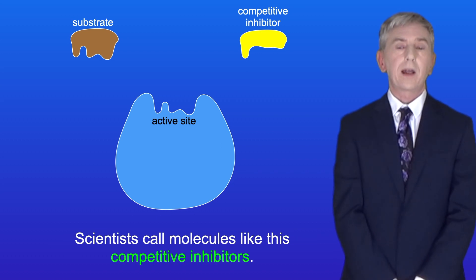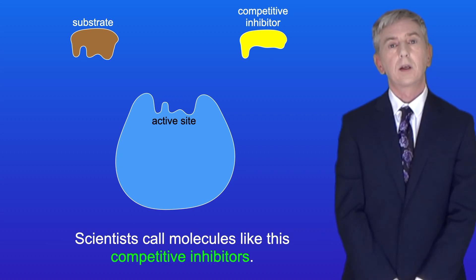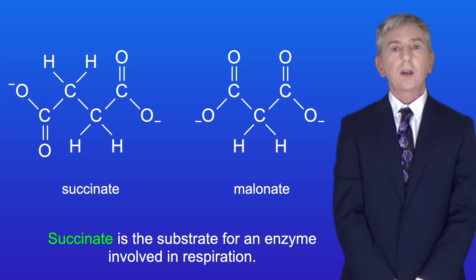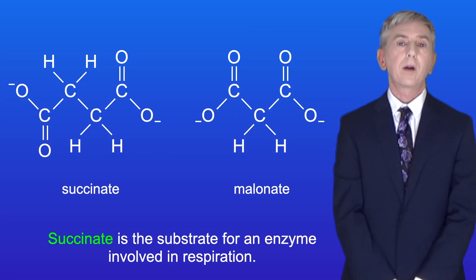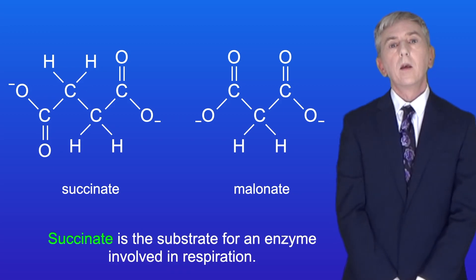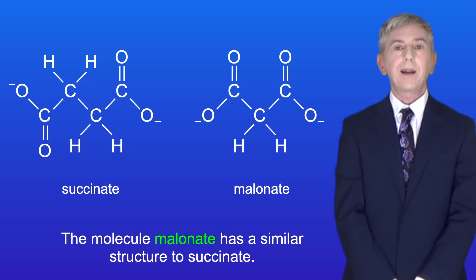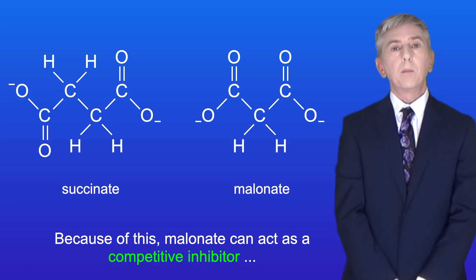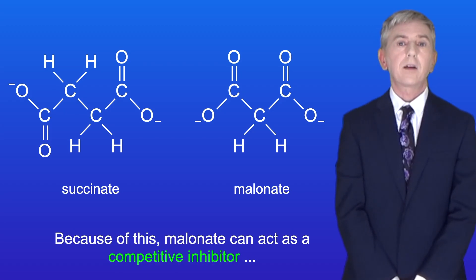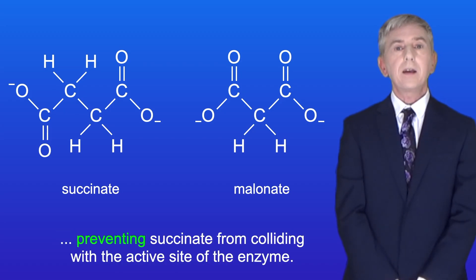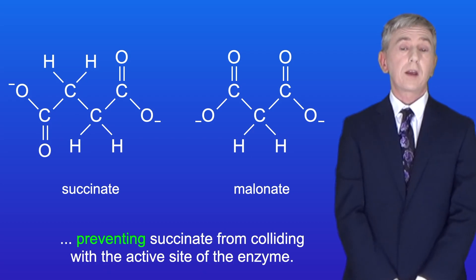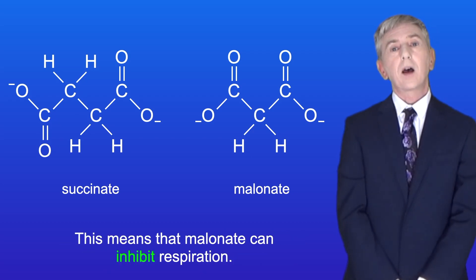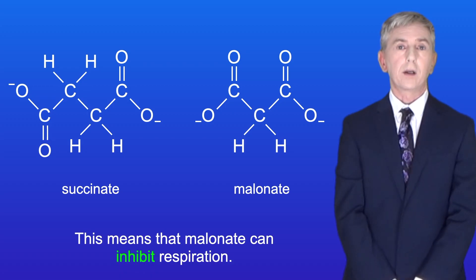Scientists call molecules like this competitive inhibitors. For example, succinate is the substrate for an enzyme involved in respiration. The molecule malinate has a similar structure to succinate, and because of this, malinate can act as a competitive inhibitor, preventing succinate from colliding with the active site of the enzyme. This means that malinate can inhibit respiration.